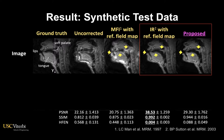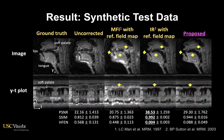Looking at the UIT plot, the proposed method exhibits sharp boundaries between tongue and air as well as around the hard soft palate, and this is found to be consistent over time.